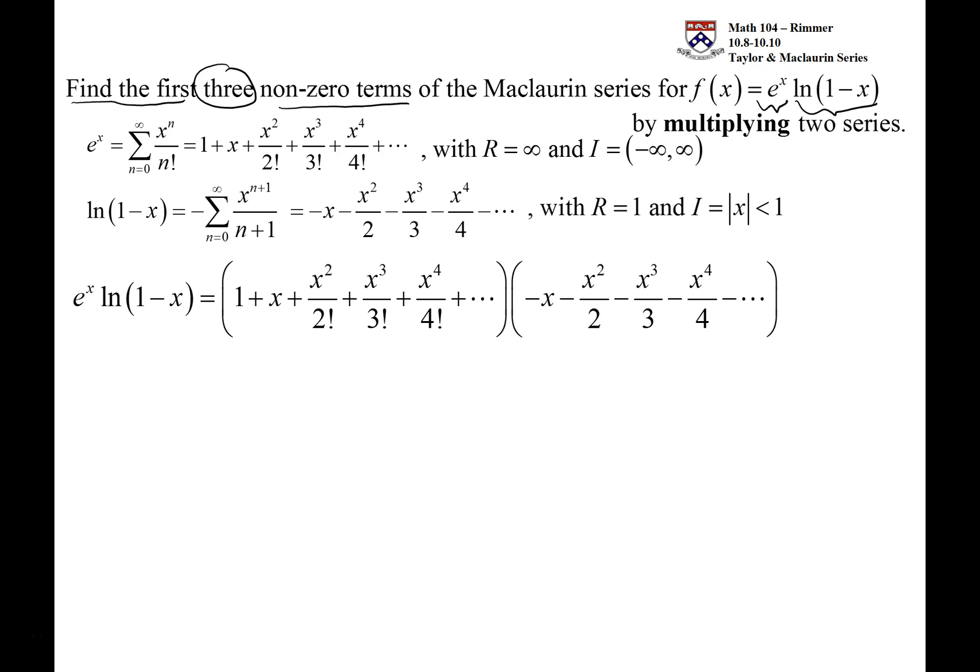So we're going to take the power series for one and multiply it by the power series for the other. And that might seem like a daunting task. It seems like that might take forever, but we're only interested in the first three non-zero terms. And so what we're going to do is some sort of super expanded foil where we take some distribution kind of idea where we take 1 times as many as we need on the right hand side.